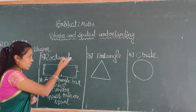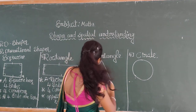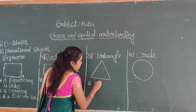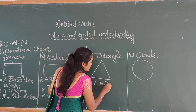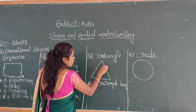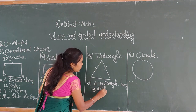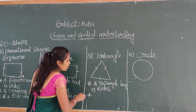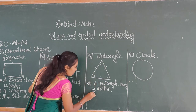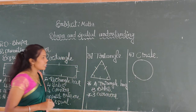What is the next shape? Triangle. How many sides and corners are in a triangle? A triangle has 1, 2, 3 — there are 3 sides. And a triangle has 3 corners.